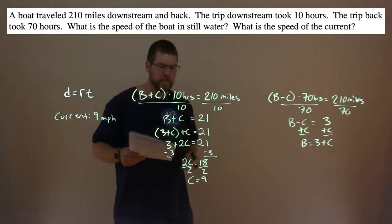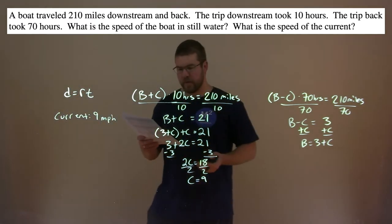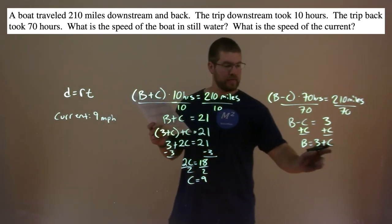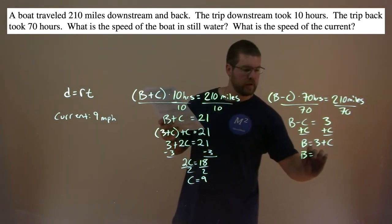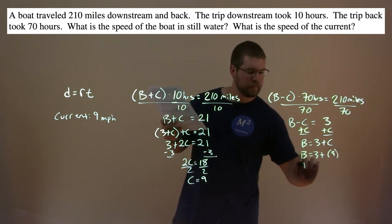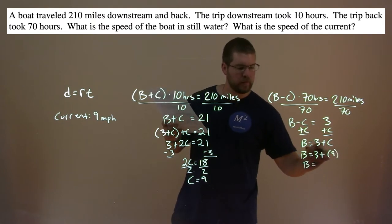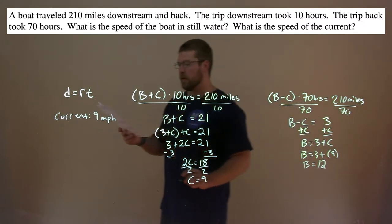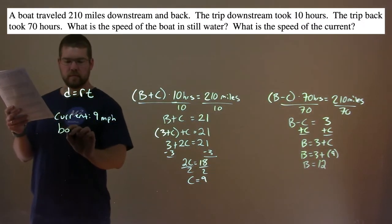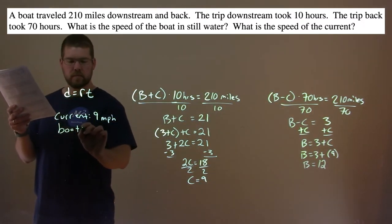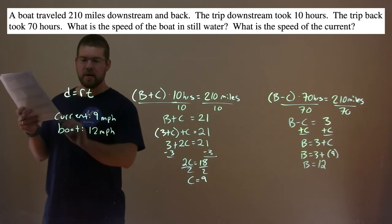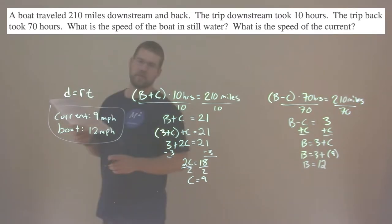Now we want to find the speed of the boat. We take that information and plug it in: boat equals 3 plus 9, and 3 plus 9 is 12. So the speed of the boat is 12 miles per hour. And there we have our final answer.